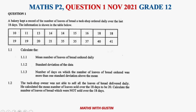It says here: a baker kept a record of the number of loaves of bread a truck shop ordered daily over the last 18 days. The information is shown below — that's the number of loaves of bread — and then we've got questions from 1.1 up until 1.3.